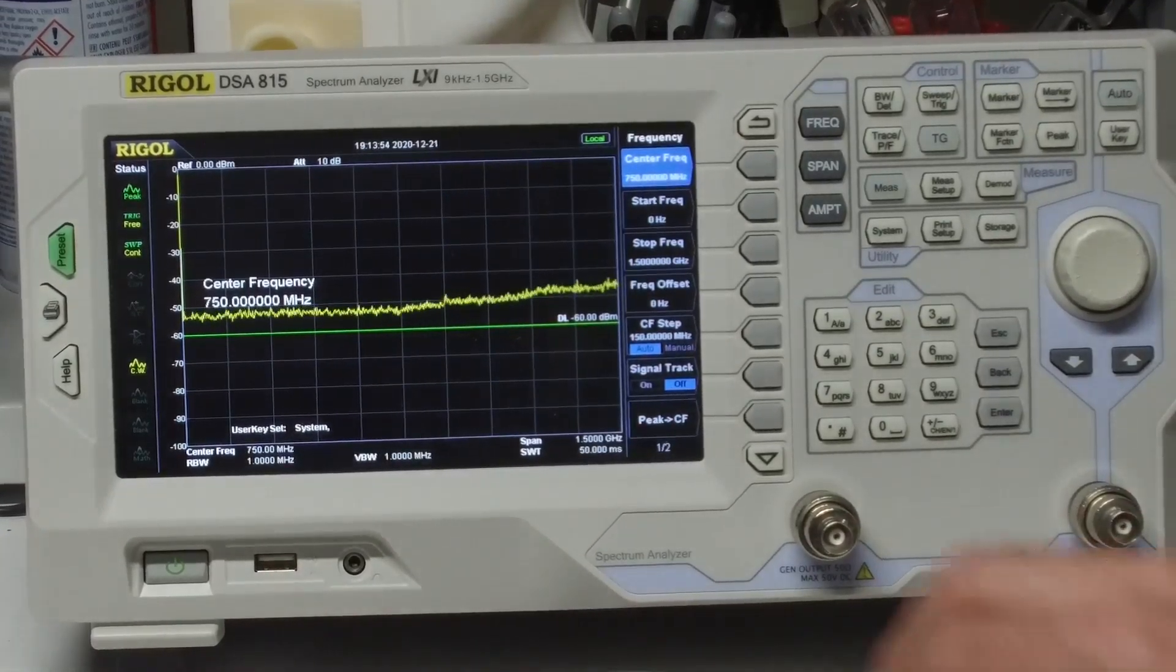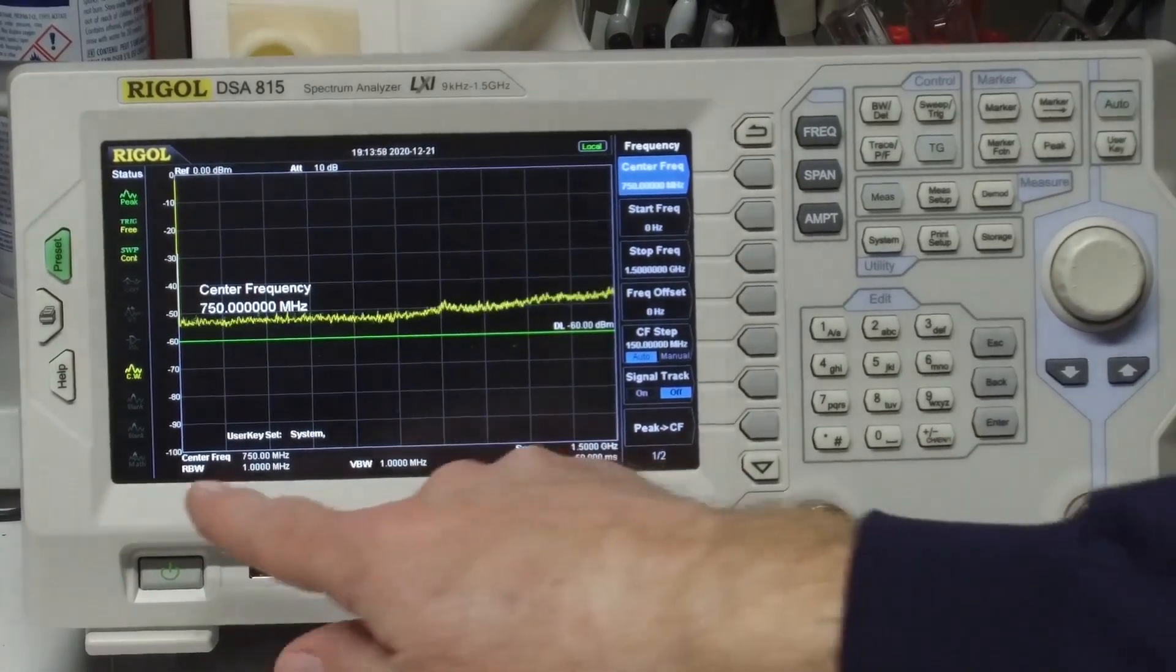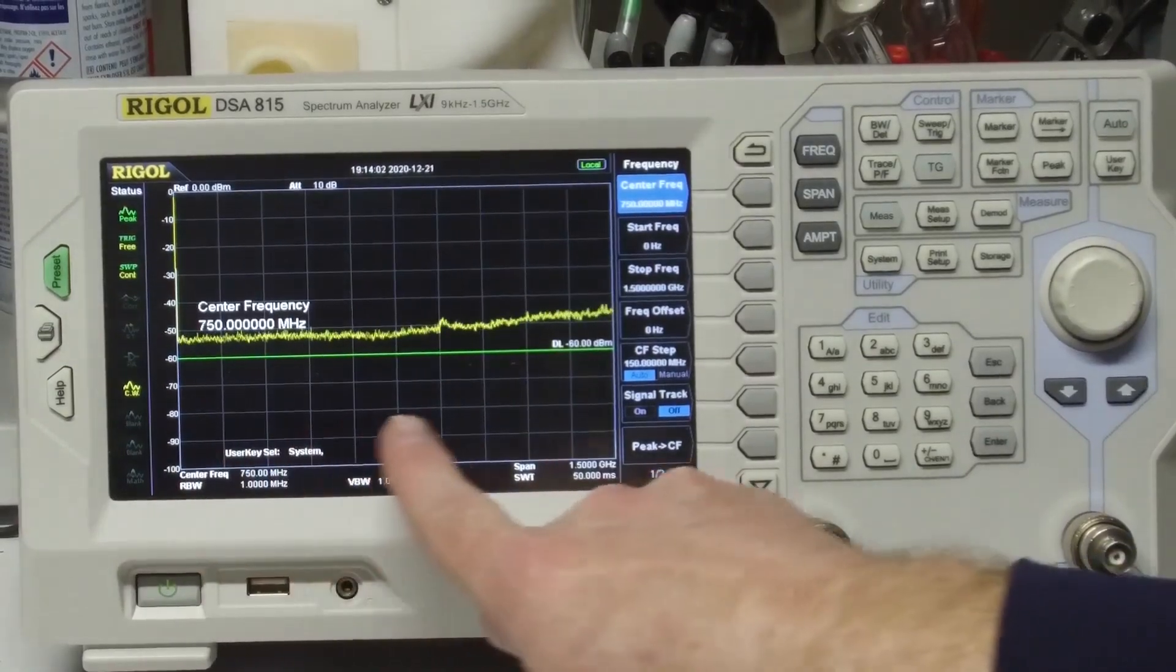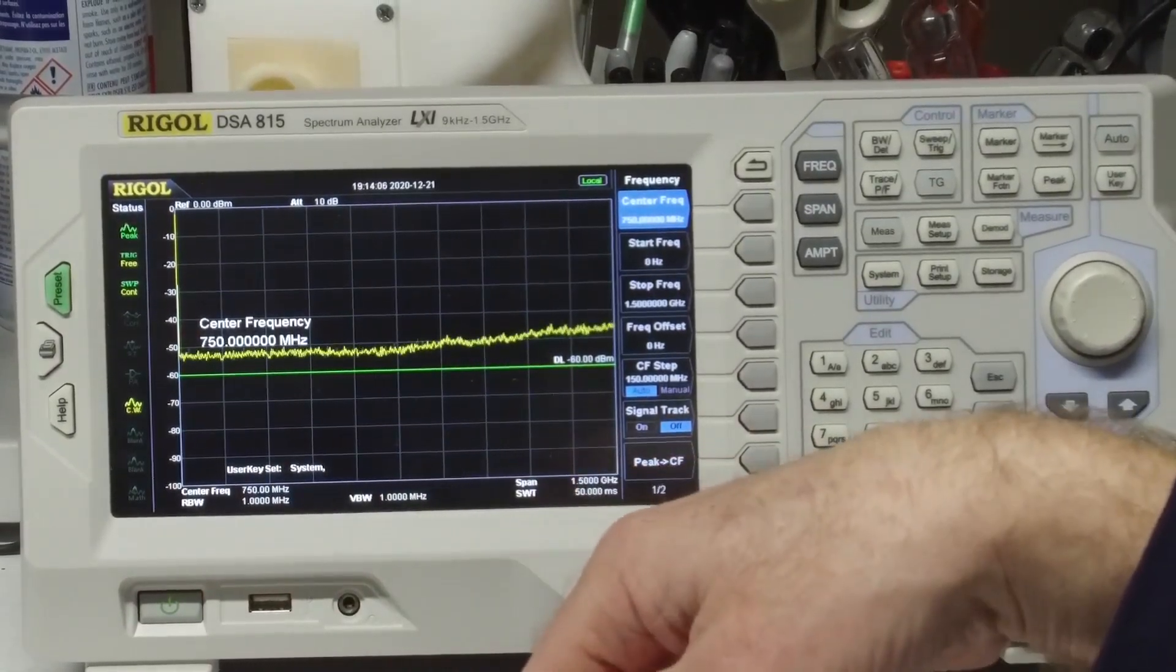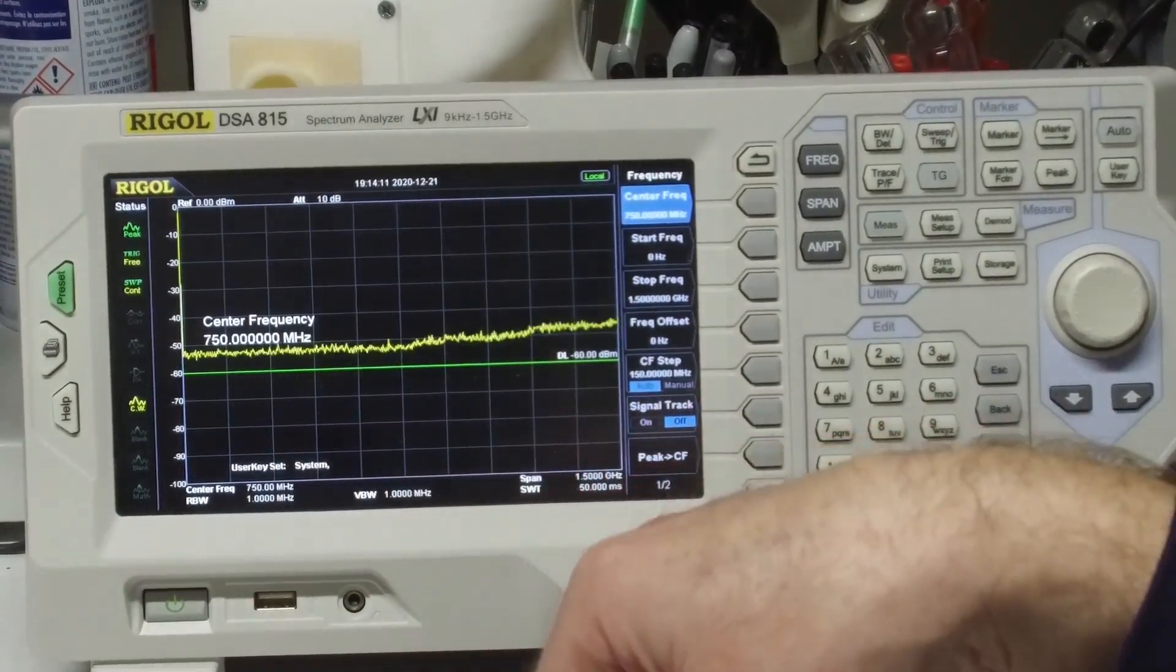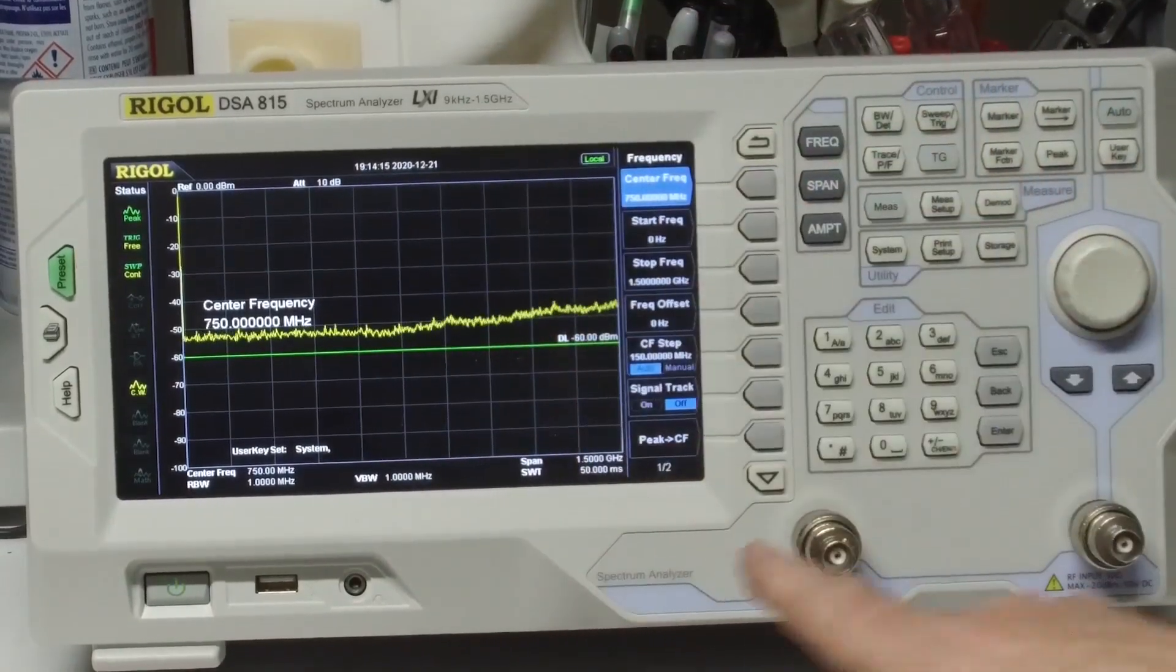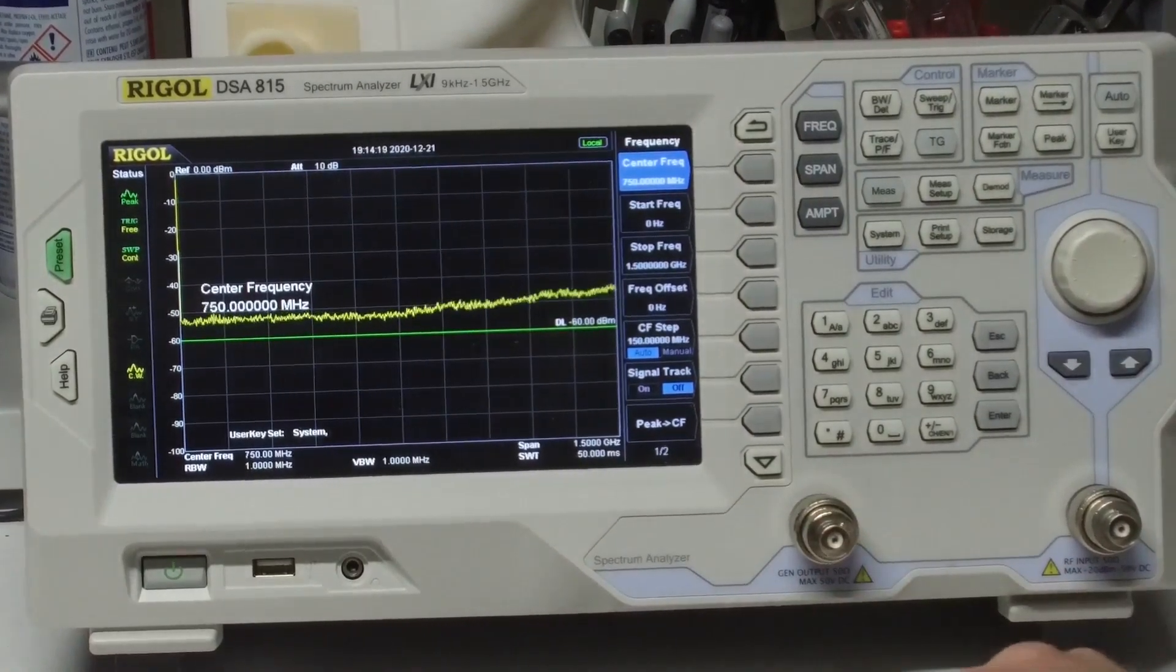So a spectrum analyzer basically looks at signals in the frequency domain and it will have a notch that moves across the bandwidth that you select and will display the data in that bandpass notch. And the tracking generator will put out a frequency at that exact same notch.